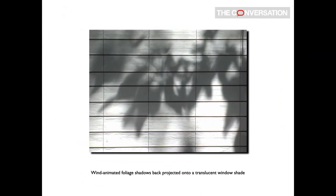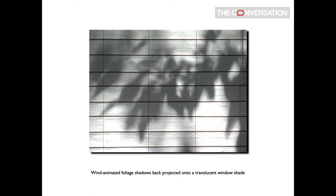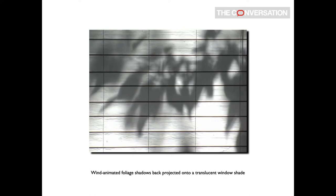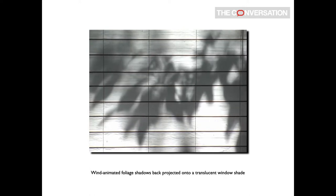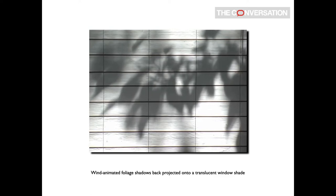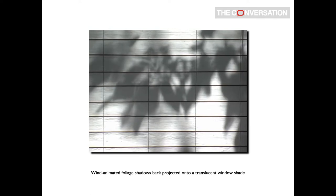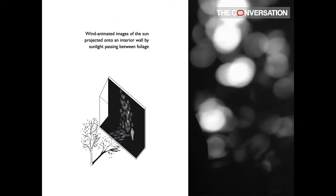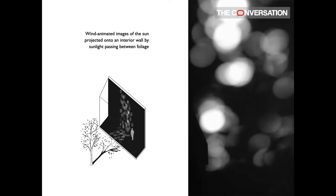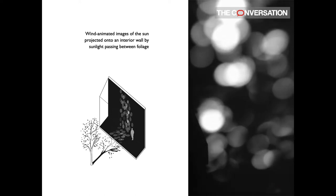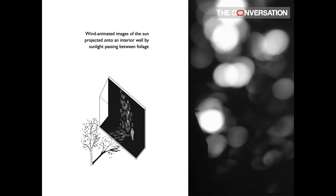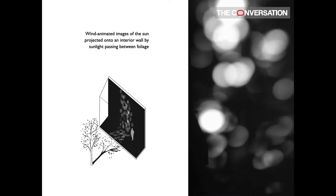If you have a deck or balcony that receives direct sun, the wind-generated movements of foliage can either be back-projected onto shades or directly projected onto interior surfaces. If sunlight passes through small enough openings — between leaves, for example — wind-animated images of the sun can also be generated indoors.